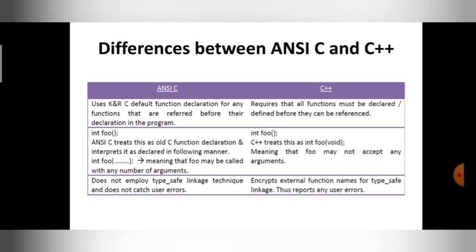In the second difference, you see there it declared a function int foo. Foo is a function name with no arguments. Same syntax I am taking for both C and C++. So here int foo, ANSI C treats this as an old C function declaration. That means ANSI C will think that foo may be called with any number of arguments.